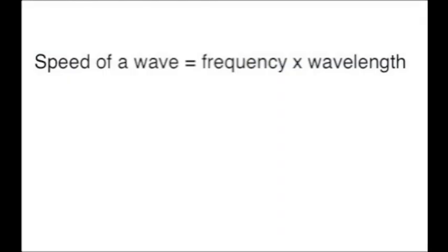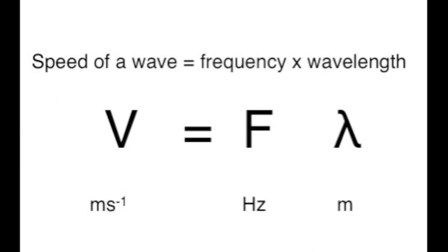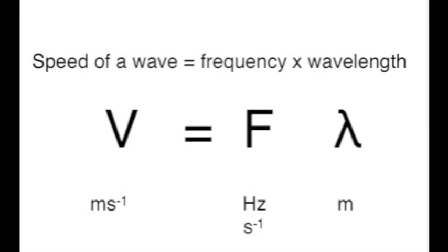There's a simple but very important connection between the measurements we have just made on frequency and wavelength and the speed of the wave. The speed of the wave is equal to the frequency multiplied by the wavelength. Often written in symbol form: the speed of the wave is V equals F times lambda, where lambda is the Greek letter for wavelength. Velocity is measured in metres per second, frequency in hertz, and wavelength in metres. The units of frequency are sometimes written as s to the minus 1, since it is a number of waves per second.